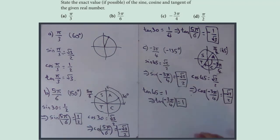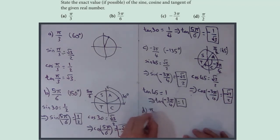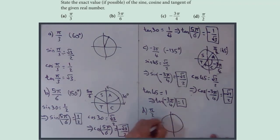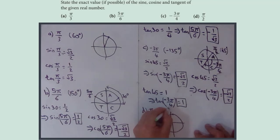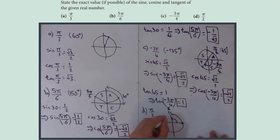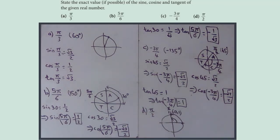Part d: π/2. π is 180, so π/2 is 90 degrees, which is right at the top of the circle. Drawing the circle — π/2 is that angle there. On the unit circle, this point is (0, 1), meaning the x-coordinate is 0 and the y-coordinate is 1.